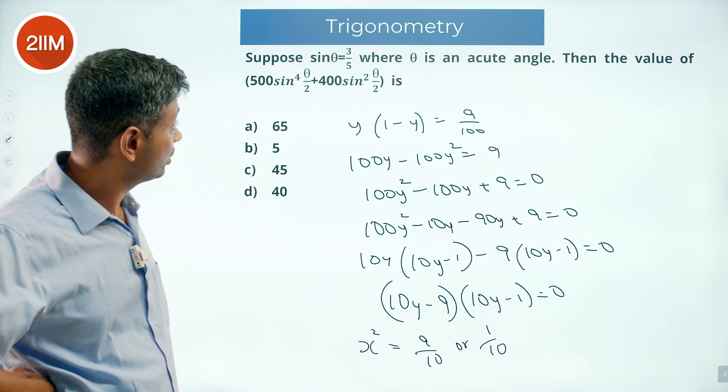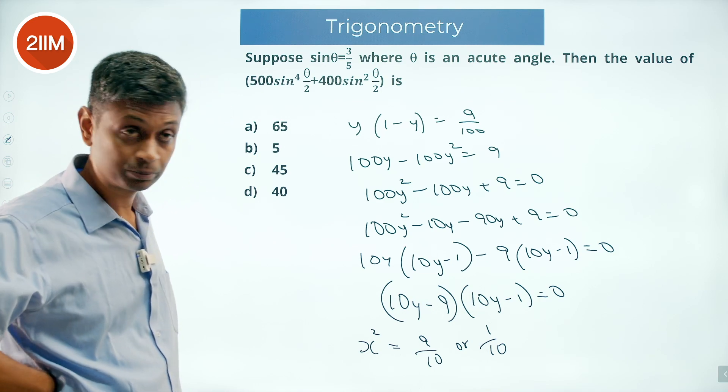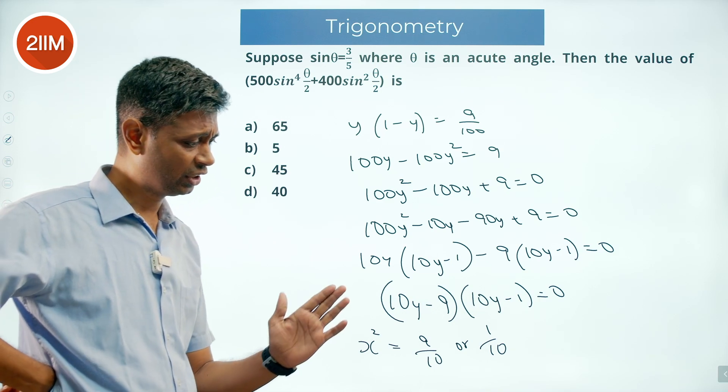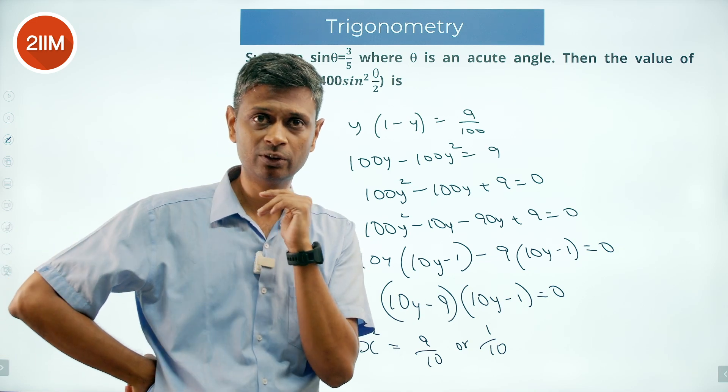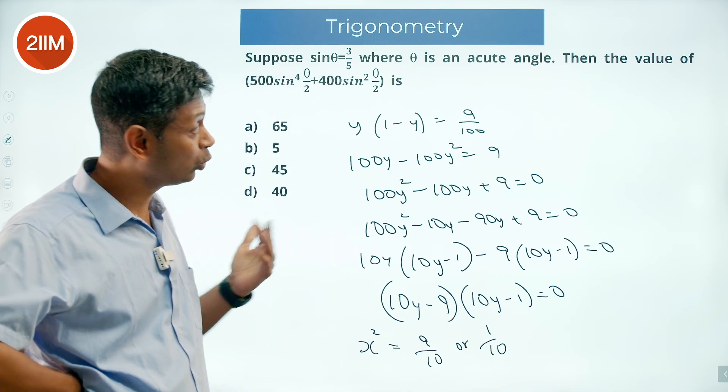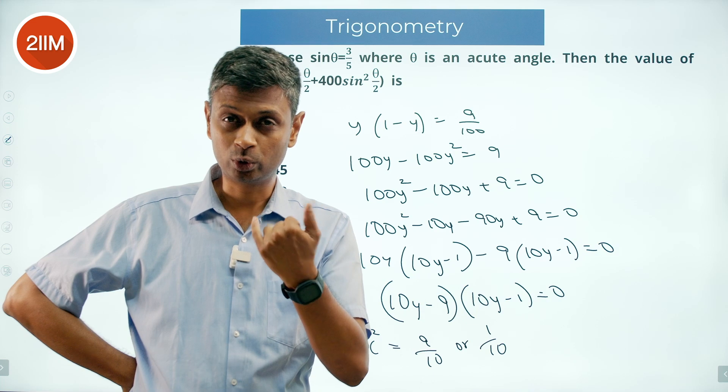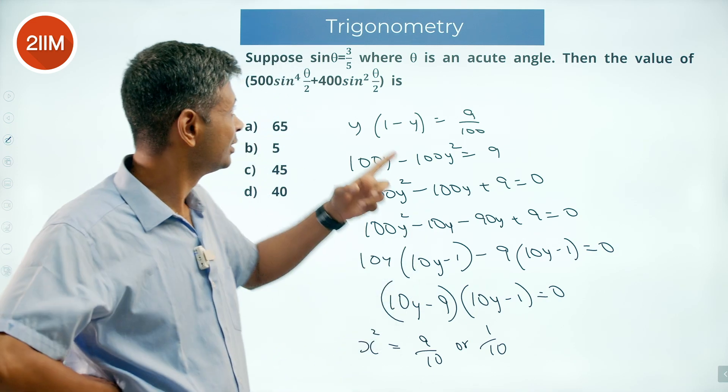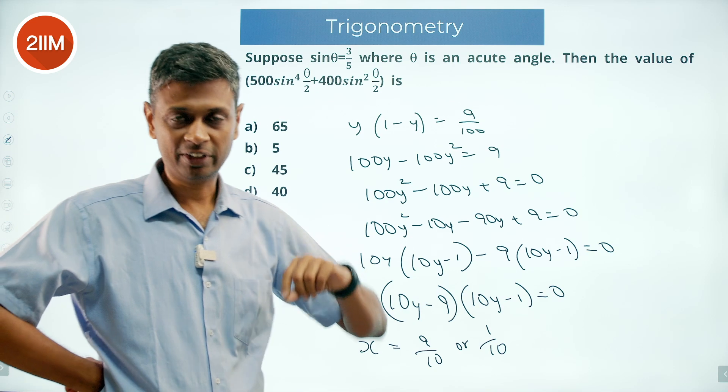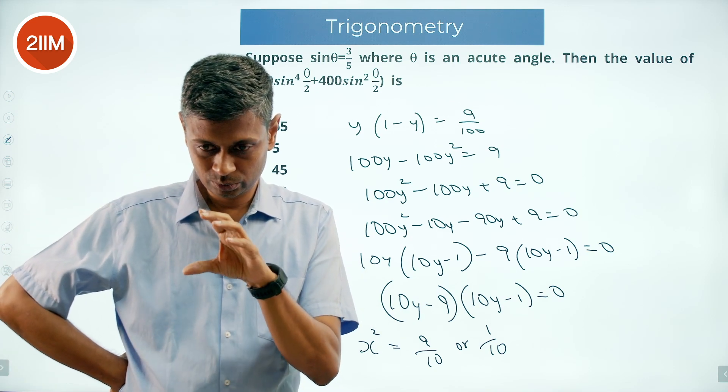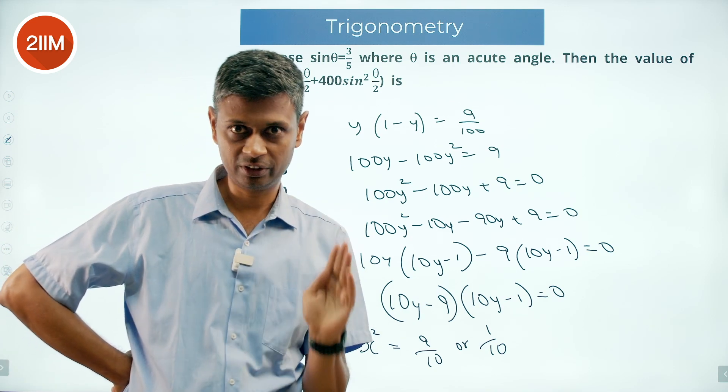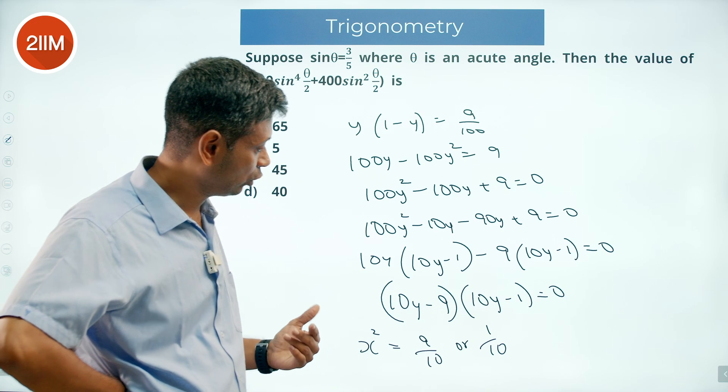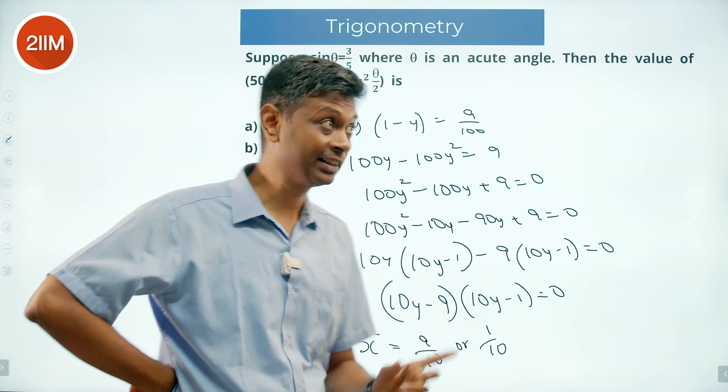Now sine theta is 3 by 5. Sine is an increasing function and theta is an acute angle. Sine 45 is 1 by root 2, which is 0.7. So theta is 3 by 5, meaning it is less than 45 degrees. Sine of theta by 2 should be even less than that.